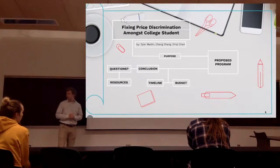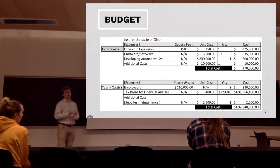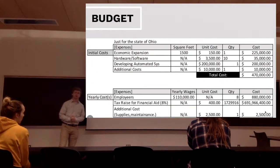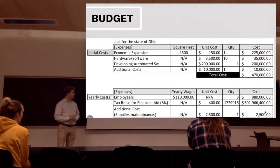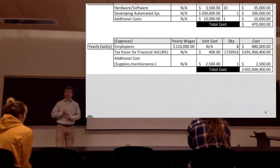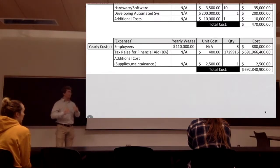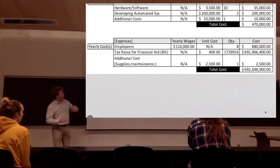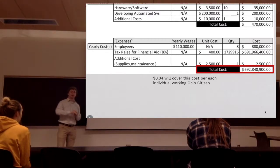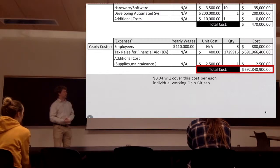I'm going to go into our budget and timeline. For our budget, we broke it into two categories: initial cost and yearly cost. The initial cost had two major expenses — the economic department expansion and the development of the automated system — totaling around $470,000. For our yearly cost, the major expense came from the tax raise for financial aid, at 8% of the total amount of money needed for each college per student, leading to a total of $693,000 for the whole yearly cost. Broken down for every working individual in Ohio, that would be about $0.34 a day.